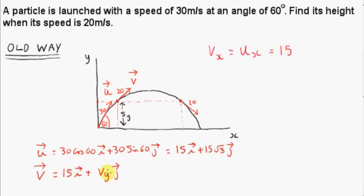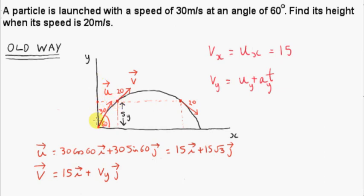What does change is the y component of the velocity, since gravity is acting vertically down. We know how to get that using v equals u plus at — the equation for linear motion in a straight line with constant or uniform acceleration — but we apply it in the y direction. We can imagine the particle's projection onto the y axis, and the projection will move up and down with uniform acceleration.